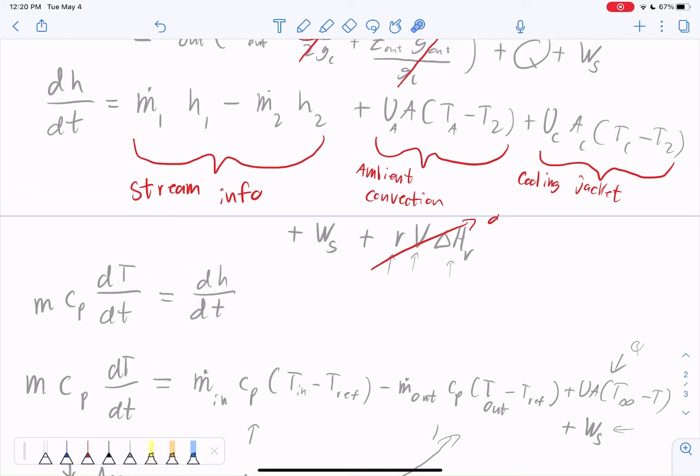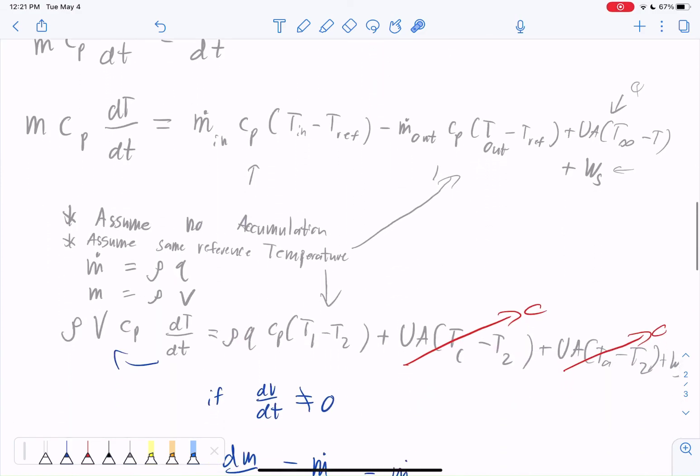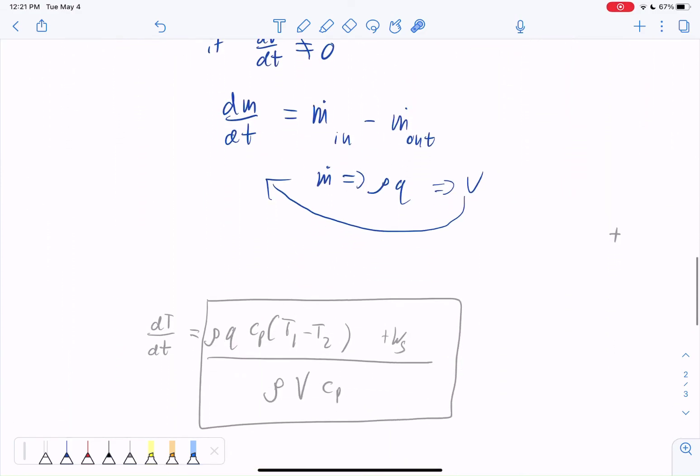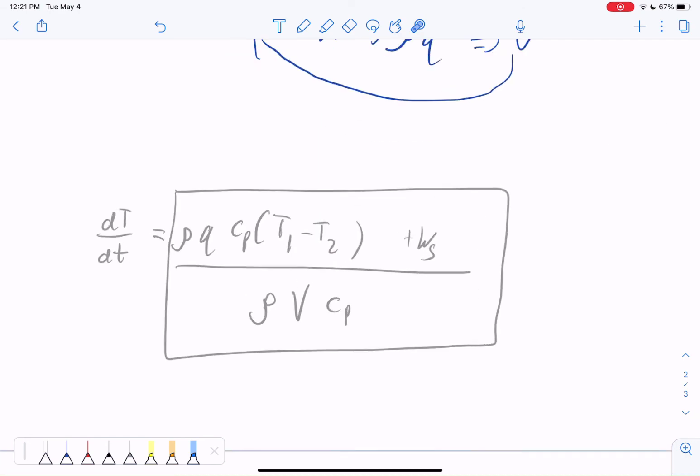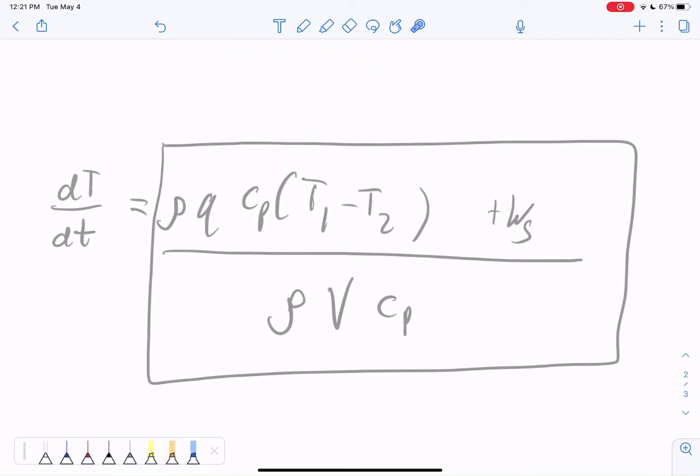If we take enthalpy right here, and we take out the mass and the heat capacity, we're left with a differential temperature with time. And then we solve for what we want, just with some algebra and plugging stuff in. And there we have our final answer. Let me know if you have any comments or questions down below in the comments.